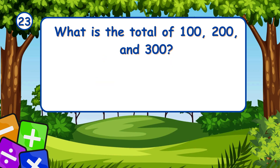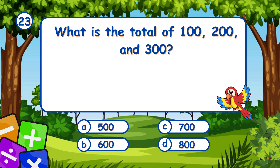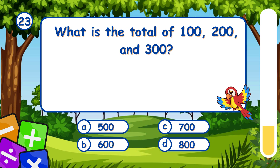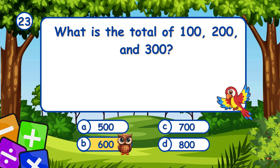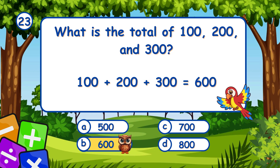What is the total of 100, 200, and 300? It's B, 600. Adding 100, 200, and 300 gives 600.